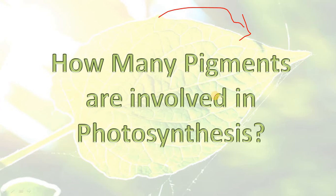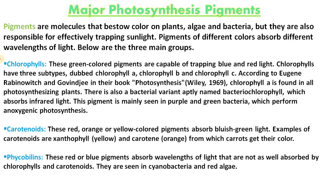How many pigments are involved in the photosynthesis process? Pigments are molecules that bestow color on plants, algae, and bacteria, but they are also responsible for effectively trapping sunlight. Pigments of different colors absorb different wavelengths of light. About 1% of the total solar energy received by the earth is absorbed by pigments and used in the major photosynthetic process.